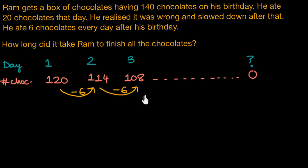So whenever we have such a pattern that involves adding or subtracting a constant number to each term to get to the next term, we have an arithmetic progression. So the way Ram eats chocolates here is an arithmetic progression. This means that the difference between any two consecutive terms is a constant number, and this constant number is known as the common difference of an AP. So negative 6 is the common difference over here.